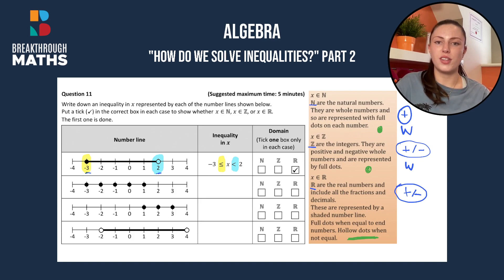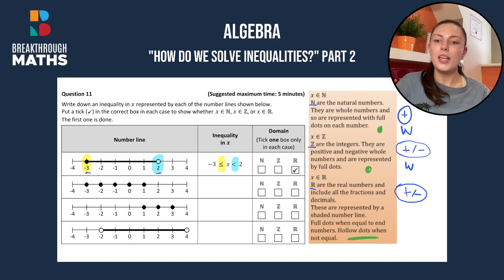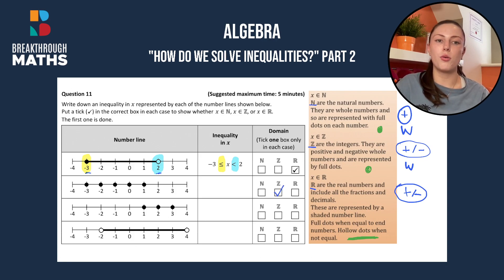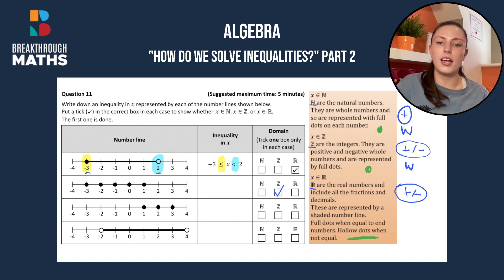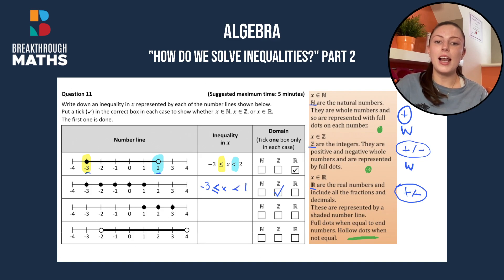For the next number line we have dots, which means it's either a natural number or an integer. We can see negative numbers are included — minus 3, minus 2, minus 1 — so it has to be an integer, because integers are positive or negative whole numbers, but natural numbers can only be positive. We put x in the middle with minus 3 and 1 at either end: x is greater than or equal to minus 3 and less than or equal to 1.